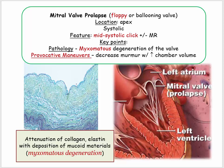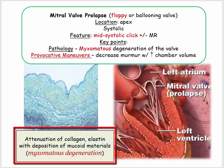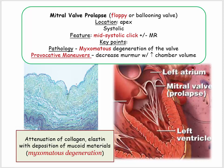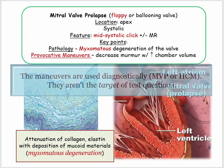They will present a vignette with features of mitral valve prolapse and inquire about the pathology. The buzz phrase is myxomatous degeneration, described by attenuation of collagen and elastin with deposition of mucopolysaccharides. This is a classic description you should be familiar with.